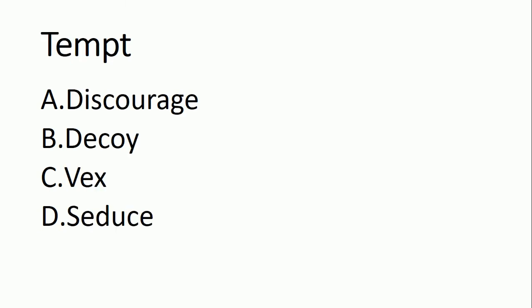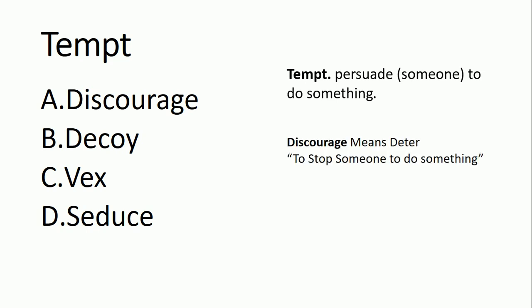Tempt means to persuade someone to do something — to encourage someone, to persuade them to do something. Here I used the word encourage, so definitely option A is the correct option, which is discourage. Discourage means to deter — to stop someone from doing something — which is completely the antonym of tempt.